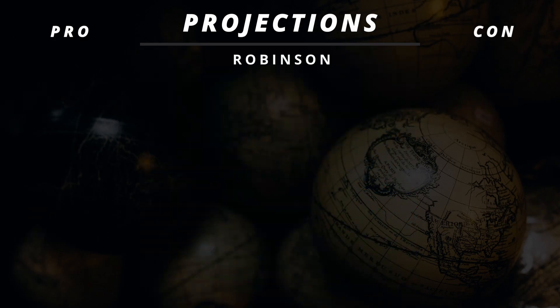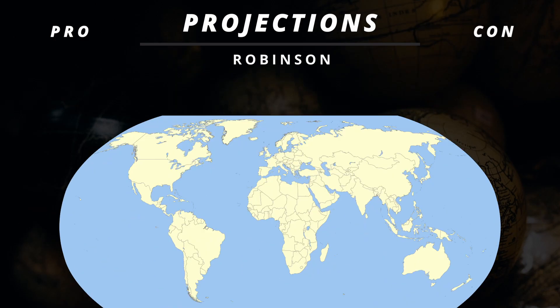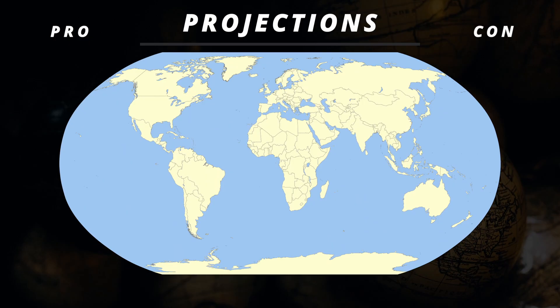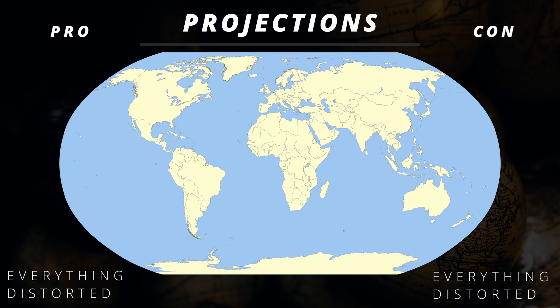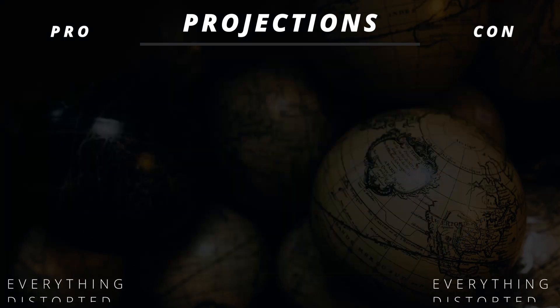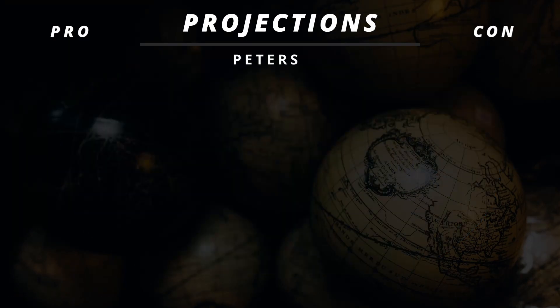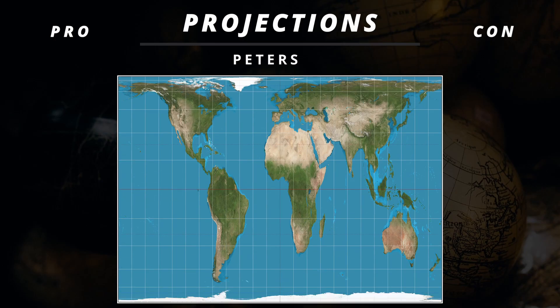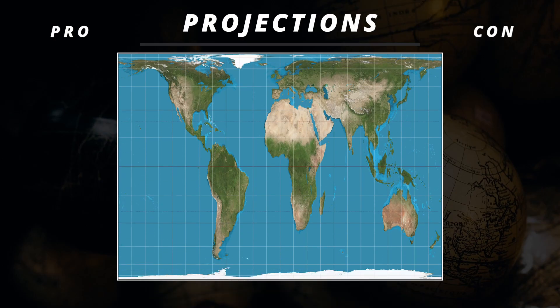There's also the Robinson Projection — it's that friend that always tries to make everybody happy, so in turn they annoy everyone in the process. It's a good projection because everything's a bit distorted, but it's also a bad projection because everything's a bit distorted. Lastly, there's the Peters Projection. In map projections it's all about the balance between size and shapes, and in this case it maintains decent sizing, but in the process of maintaining the size, it ruins the shape of the countries.